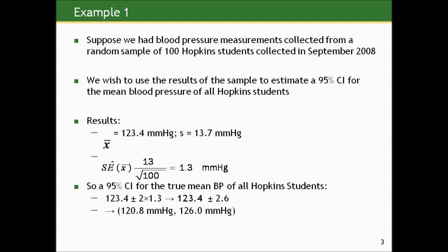So a 95% confidence interval for the true mean blood pressure of all Hopkins students is 123.4 plus or minus 2 times 1.3, giving an interval from 120.8 to 126.0 mmHg. Recognizing the uncertainty in our estimate gives us a small but real range of possibilities for the true mean. We might repeat this study in a different month, like December during finals, to compare intervals and see if there's evidence of a systematic shift in blood pressures.